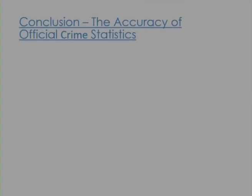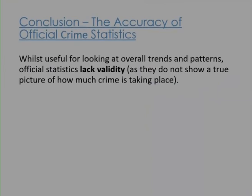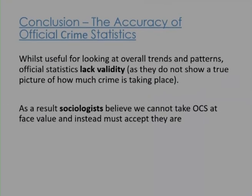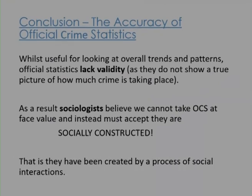The conclusion is: how accurate are official crime statistics? Well, they can be useful for looking at overall trends and patterns, but sociologists would say they lack validity — they do not show us a true picture of how much crime is taking place. So next time you're watching the news and you hear about gun crime increasing, or knife crime or violent crime, you need to question that and think about how much crime is actually happening. Sociologists believe we cannot take official crime statistics at face value; instead we must accept that they are socially constructed — created by a process of social interactions. The police may also be biased in particular ways towards particular classes, ethnicities, ages and genders, and all of those things can affect the statistics we see.